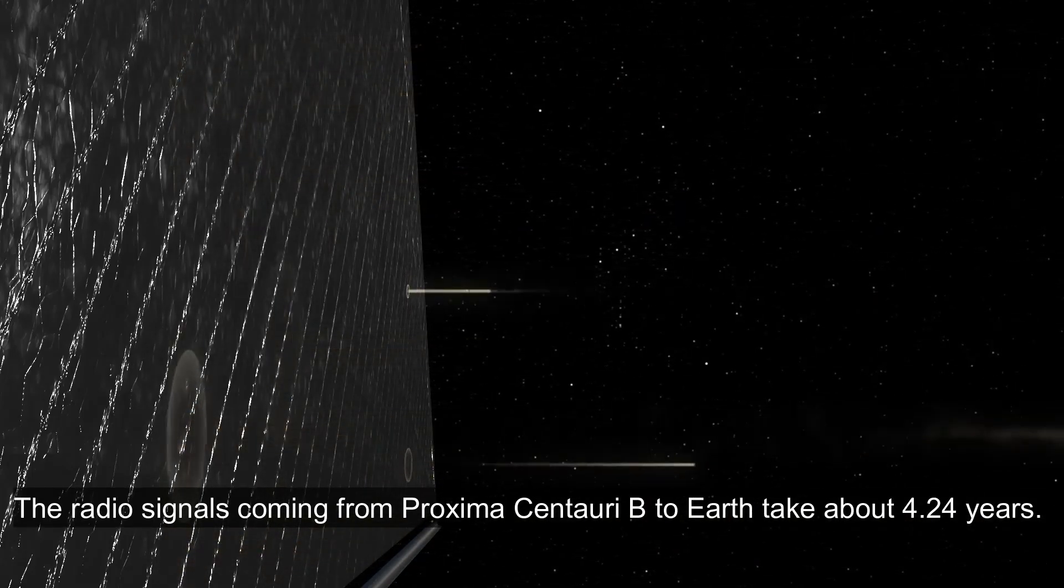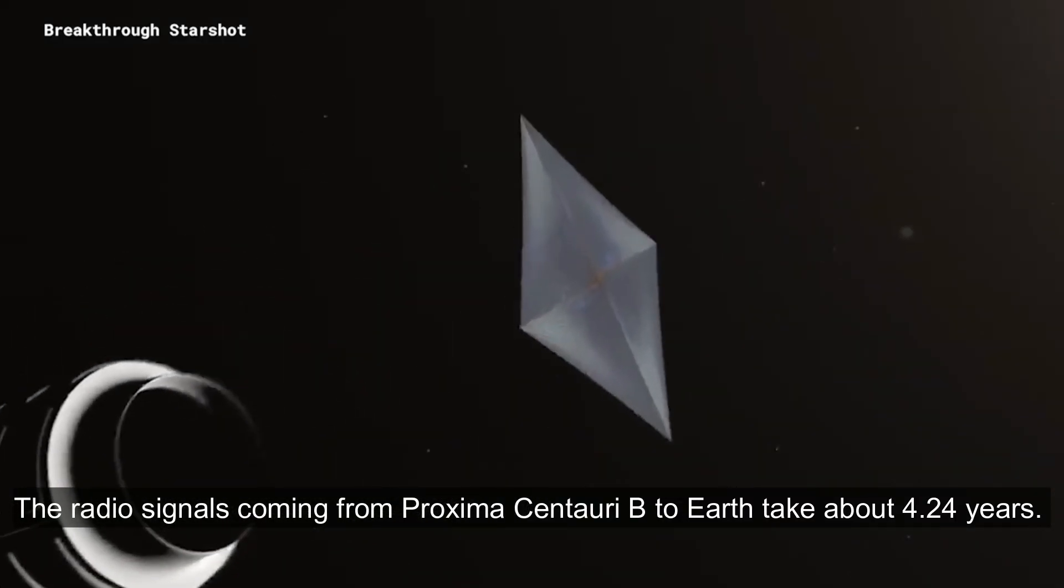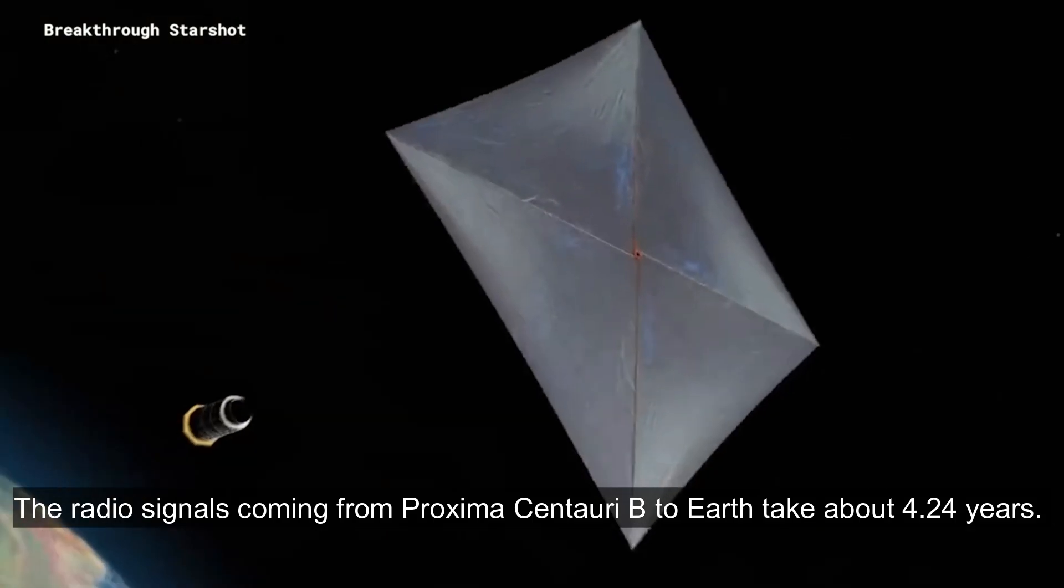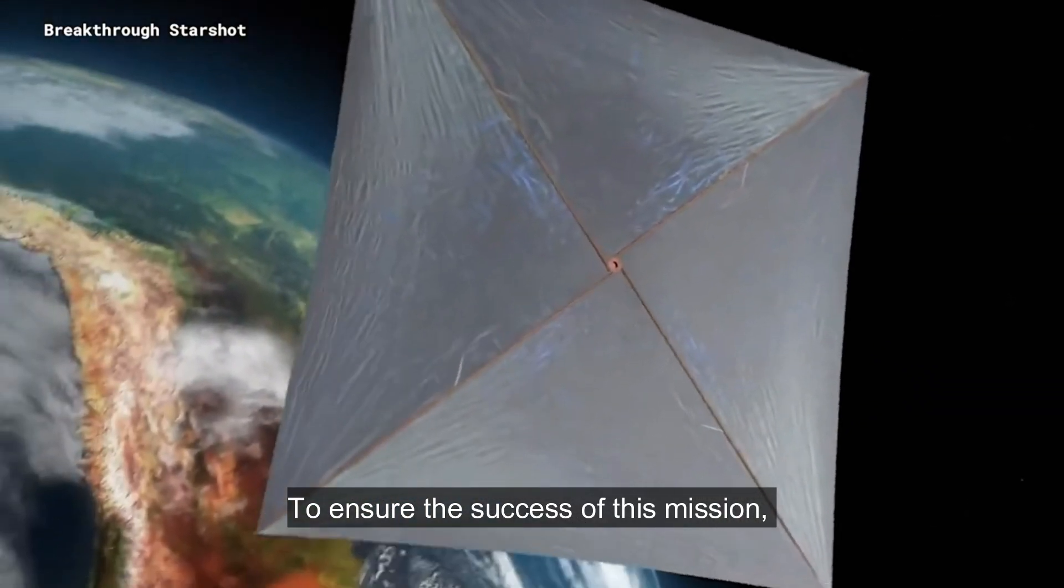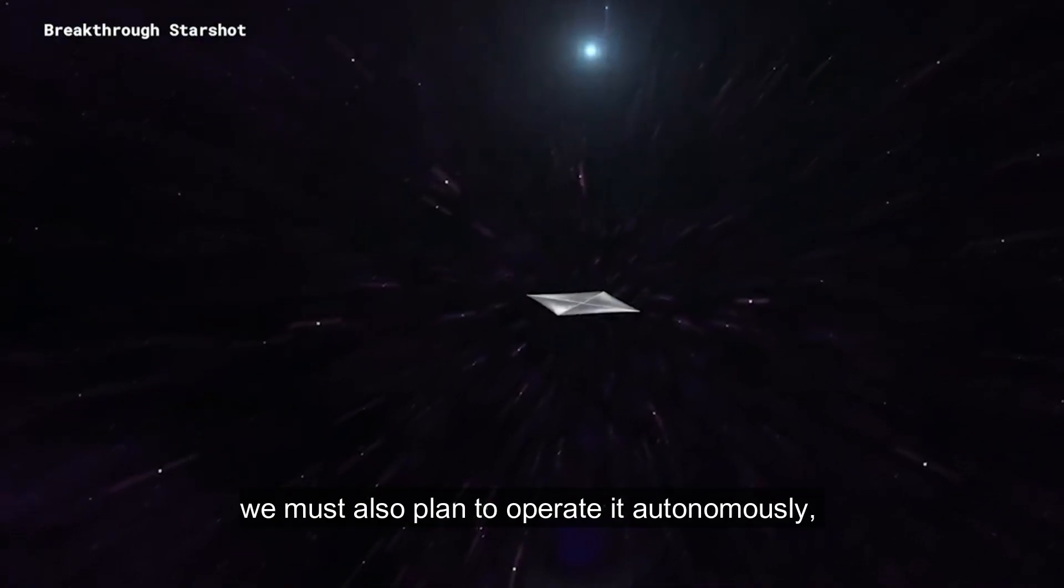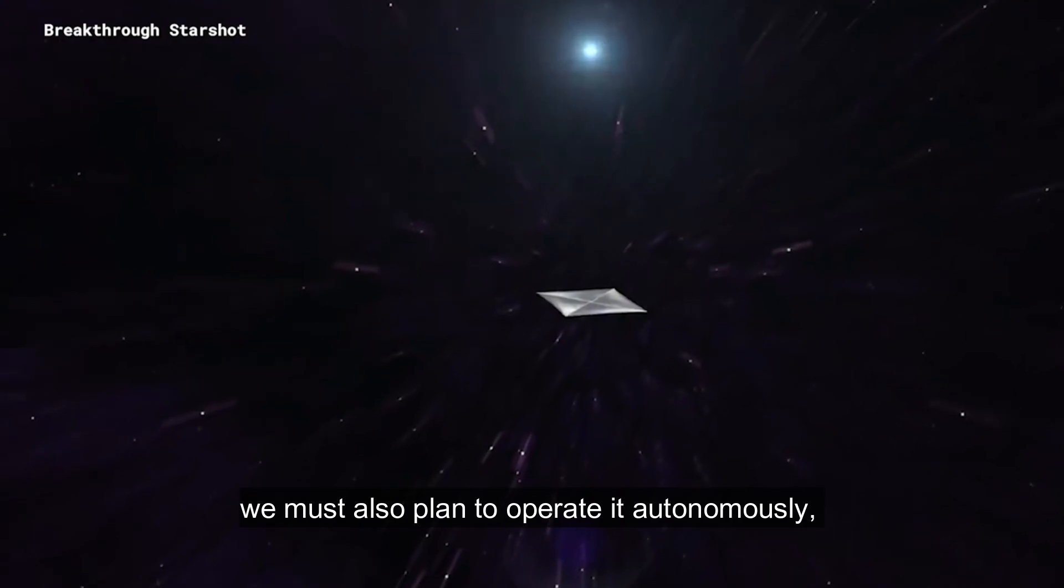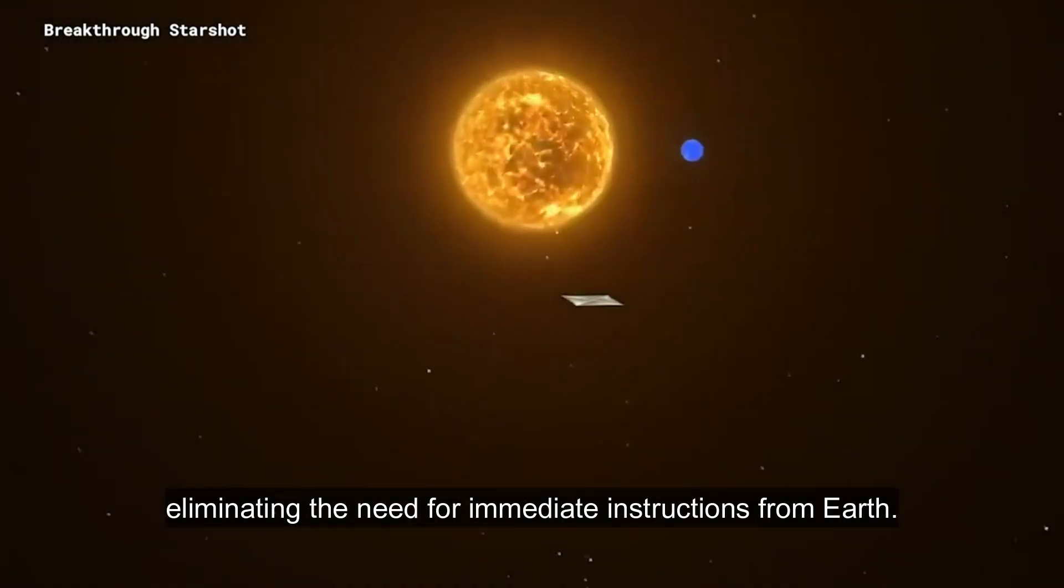The radio signals coming from Proxima Centauri b to Earth take about 4.24 years. To ensure the success of this mission, we must also plan to operate it autonomously, eliminating the need for immediate instructions from Earth.